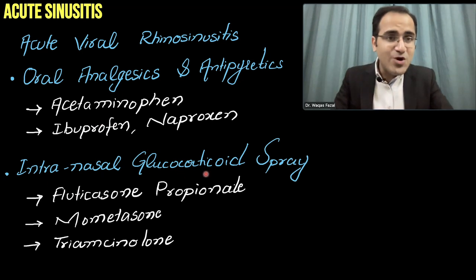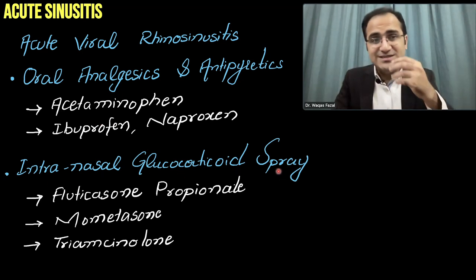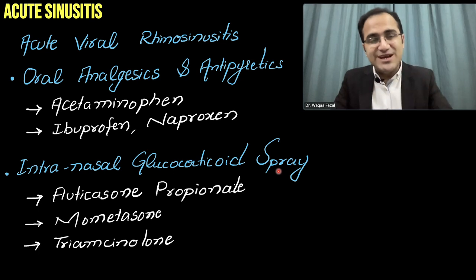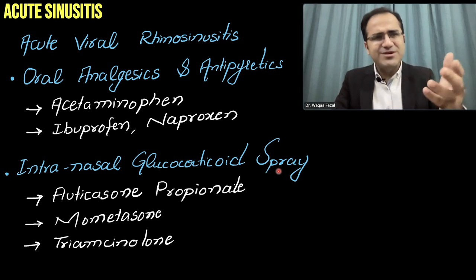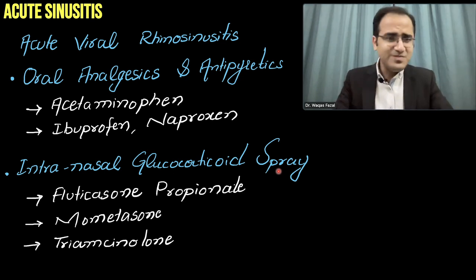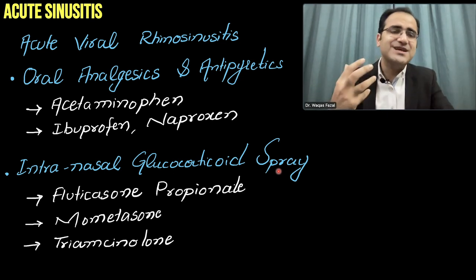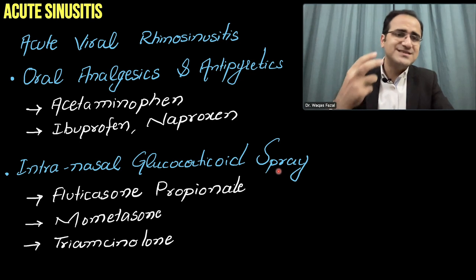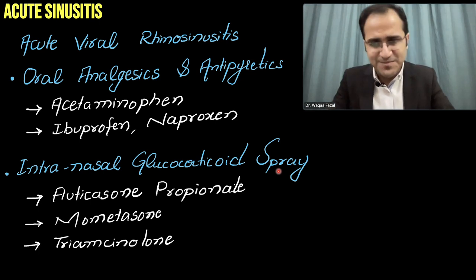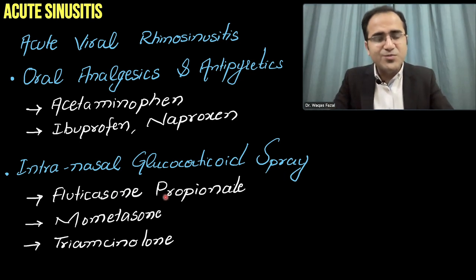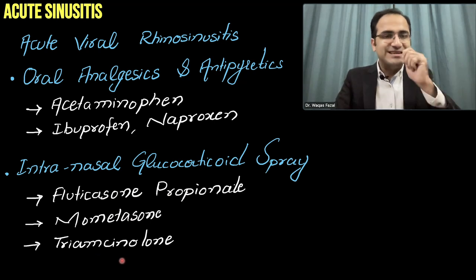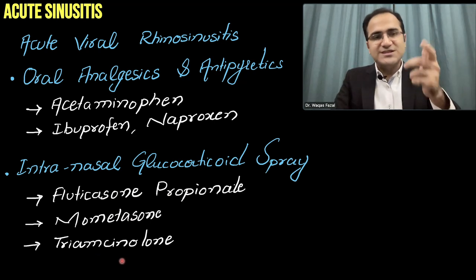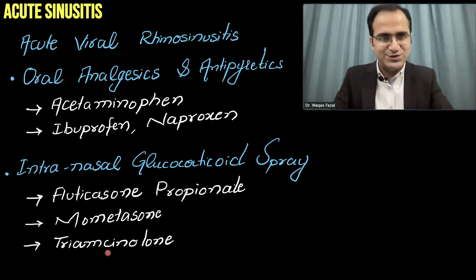Intranasal glucocorticoid sprays (topical steroids) can be used as symptomatic care in acute sinusitis to reduce inflammation in the nasal sinuses and mucosa. Options include topical fluticasone propionate, mometasone, and triamcinolone as intranasal glucocorticoid sprays.